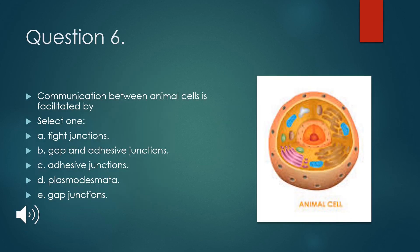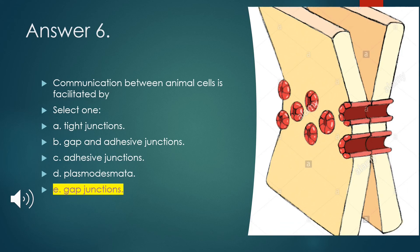Question 6: Communication between animal cells is facilitated by — A. tight junctions; B. gap and adhesive junctions; C. adhesive junctions; D. plasmodesmata; or E. gap junctions. The right answer to question 6 is E — gap junctions. You can see the gap junctions in the picture to the right.